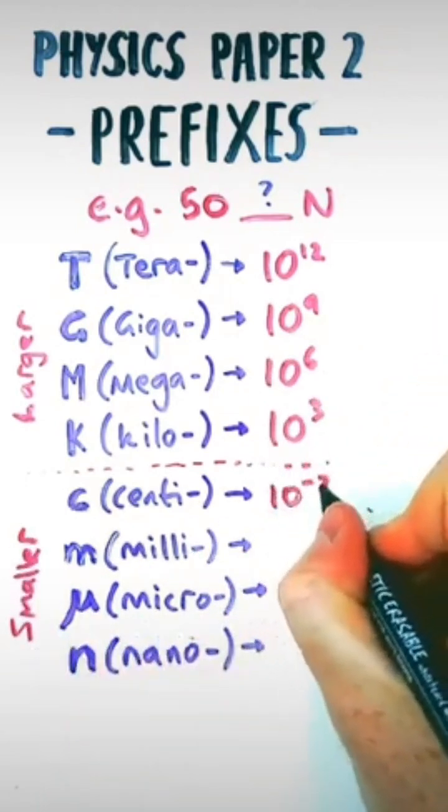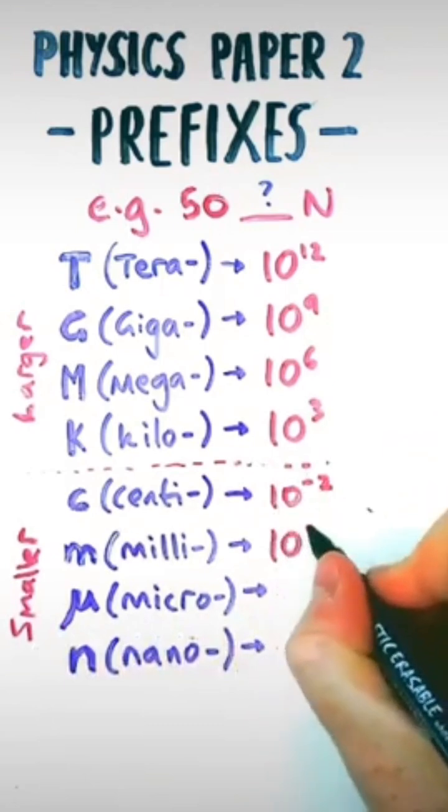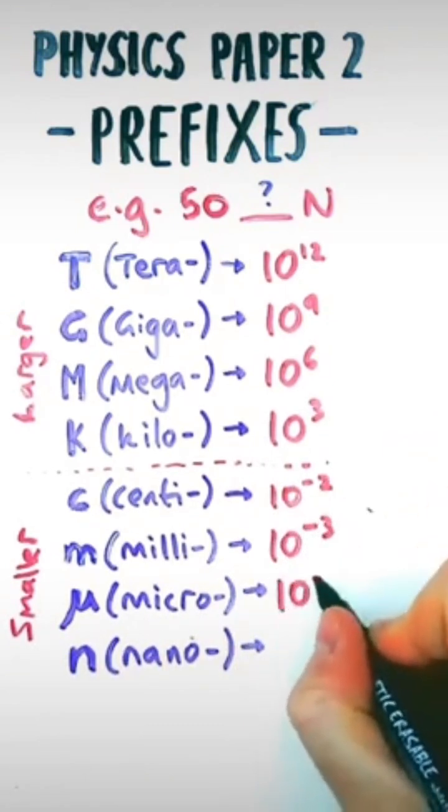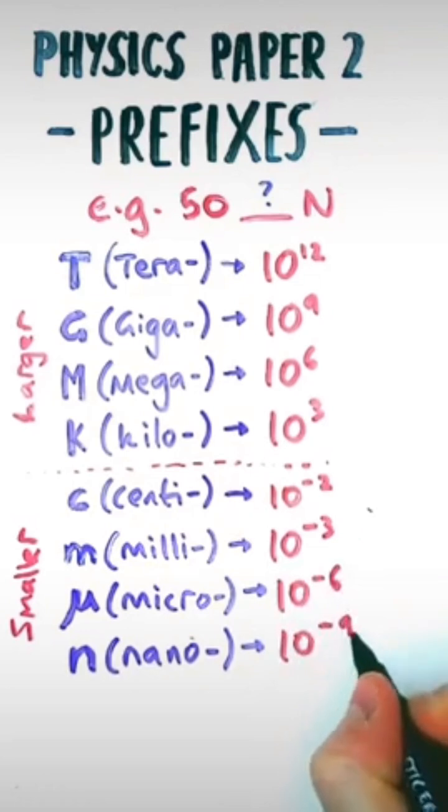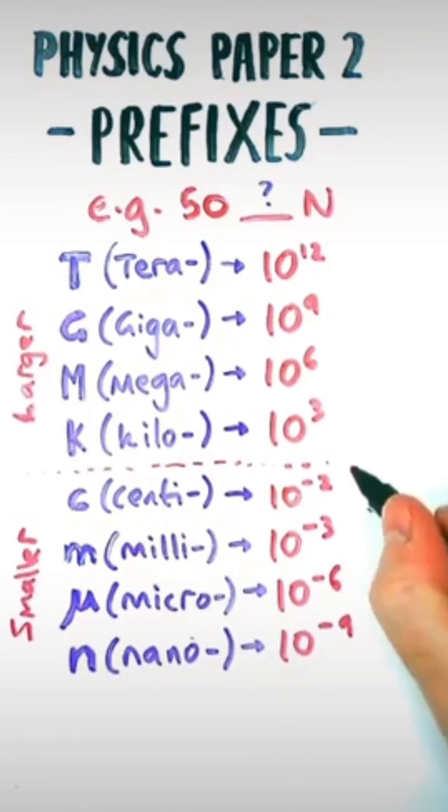Milli is 10 to the power minus 3, micro is 10 to the power minus 6. Nano is the smallest, 10 to the power minus 9. Now some people prefer to, instead of learning these, divide by 100 or divide by a thousand.